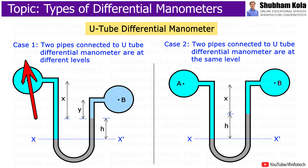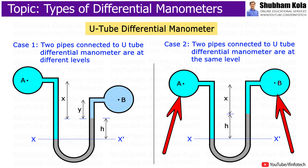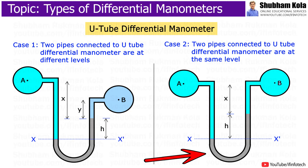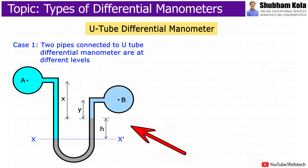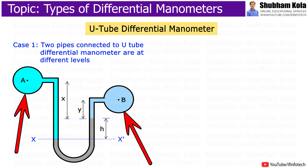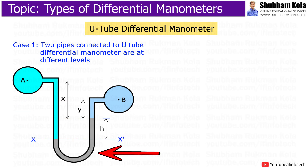In the first case, the two pipes connected to the U-tube differential manometer are at different levels. In the second case, the pipes connected to the U-tube differential manometer are at the same level. In the first case, let two points A and B be at different levels and also contain liquids of different specific gravity. These points are connected to the U-tube differential manometer.